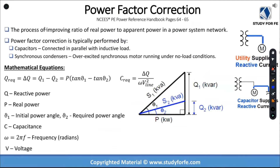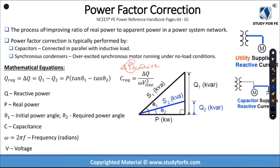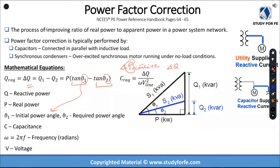Let me go over these formulas. In the handbook, on page 66 at the bottom, they use the term 'delta P reactive,' which I find very confusing because P, 95% of the time in all the textbooks, is associated with real power — not reactive. I think they should simply change that to delta Q. You can use that formula directly, but you have to make sure you're identifying these angles properly. Theta one is your initial power angle — that's your poor or incorrect power factor angle.